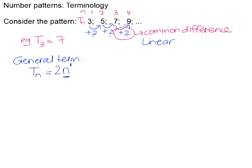We need to multiply N by the common difference. If the common difference was 3, I'd multiply N by 3. If the difference was negative 5, I'd multiply N by negative 5. Testing 2 times N: 2×1 is not 3, 2×2 is not 5, 2×3 is not 7. But if you add 1 to twice the value of N, it does generate the pattern: 2×1+1=3, 2×2+1=5, 2×3+1=7. So TN = 2N + 1 is the formula that generates the terms of this pattern.